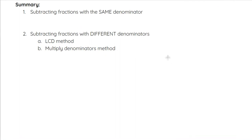In summary, we can subtract fractions with the same denominator by subtracting the numerators across the top and keeping the same denominator. For different denominators, you have two methods: find the least common denominator, or simply multiply the denominators together. The second method sometimes gives you the LCD and sometimes a larger common denominator, but it still works. Once you have the common denominator, subtract just like the same-denominator method.